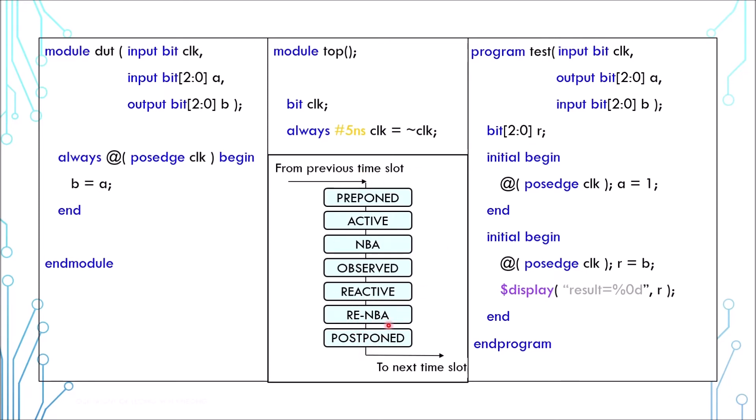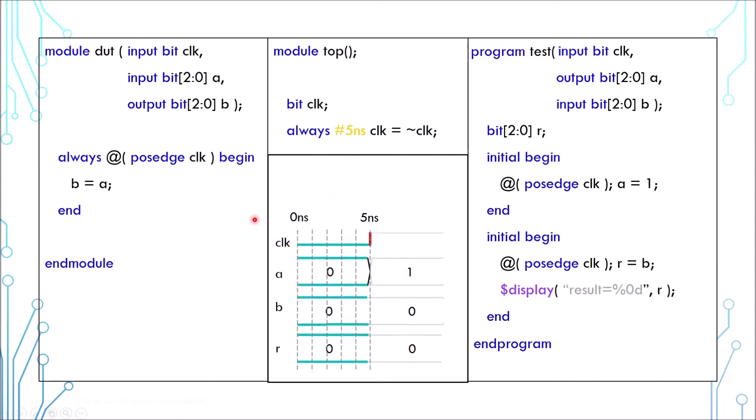Every stage is designated for certain kind of assignment. I will not go through all. The active stage is for blocking assignments in the module. The NBA stage is for non-blocking, but we don't have any here. The reactive stage is for blocking assignments in the program.